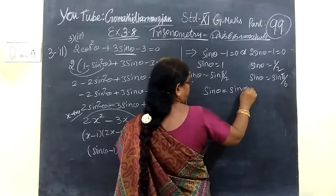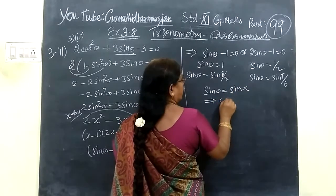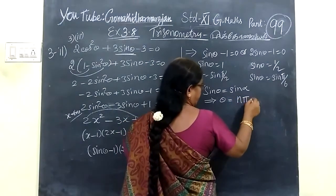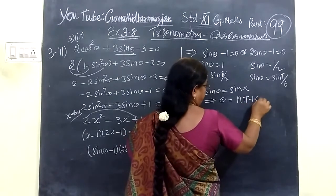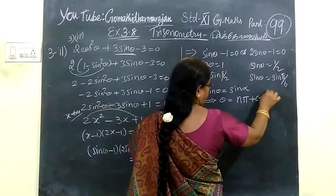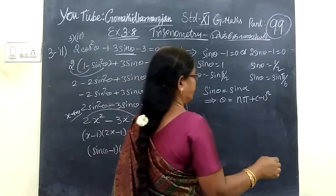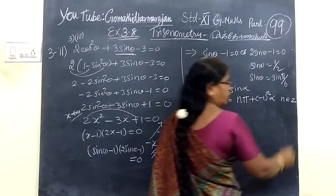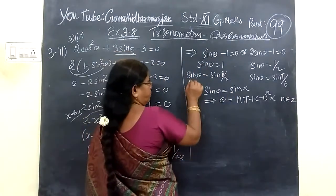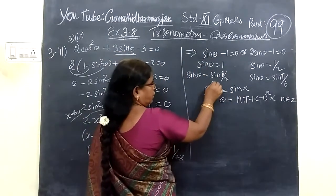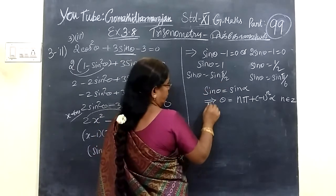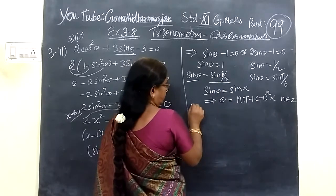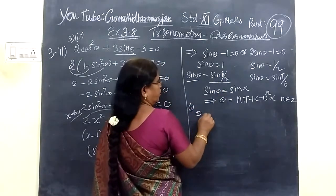So sin theta minus 1 implies theta equal to 0 or sin, you are writing n pi then plus minus 1 over n plus alpha where n belongs to Z. So theta equals n pi plus minus pi over 2, where n belongs to Z.